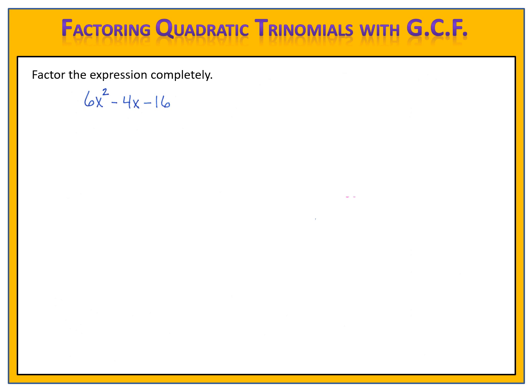Let's look at our three terms: 6x squared minus 4x minus 16. Is there a number that divides all three of those terms evenly? Yes, there is. That factor is 2. So we now have 2 times the quantity 3x squared minus 2x minus 8.